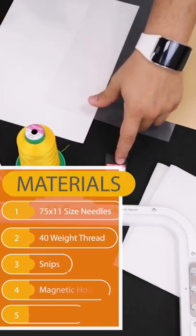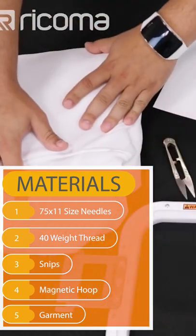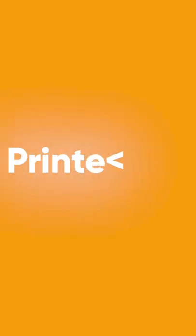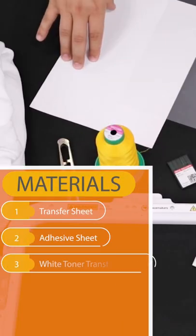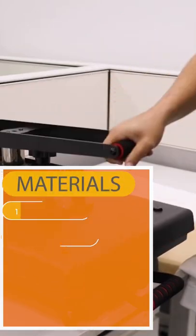75 by 11 size needle, 40 weight thread, our snips, the magnetic hoops, and we're going to be embroidering on this sweater. Your transfer sheet, your adhesive sheet, white toner transfer printer. Our Teflon sheet.